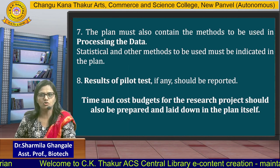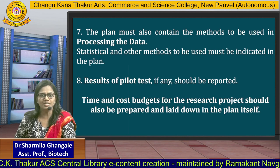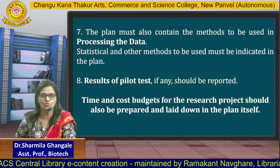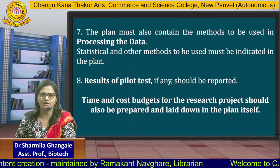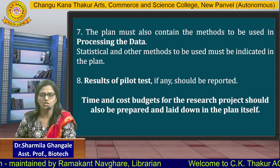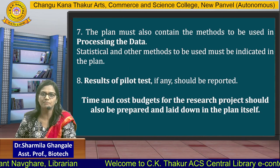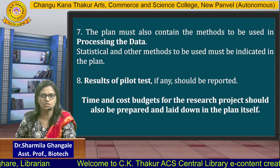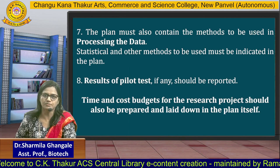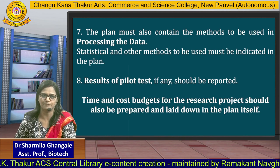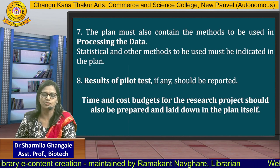The plan must also contain methods to be used for processing the data. In science and technology, we use statistical and other methods which have to be indicated in the plan. Whenever we have the research plan, we must know by which means the collected data is going to be processed. The most probable method is the statistical method to be used for processing the data — statistical or biostatistical methods can be used for processing the data.